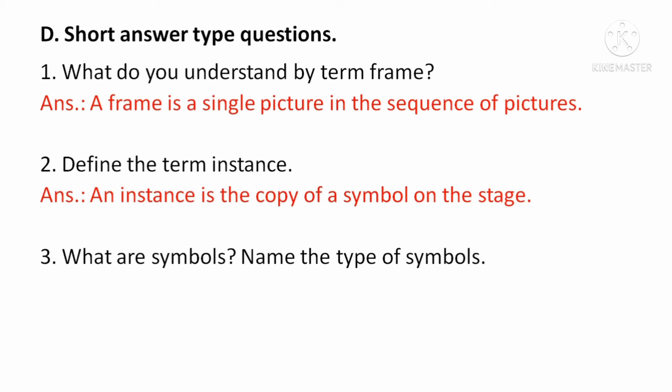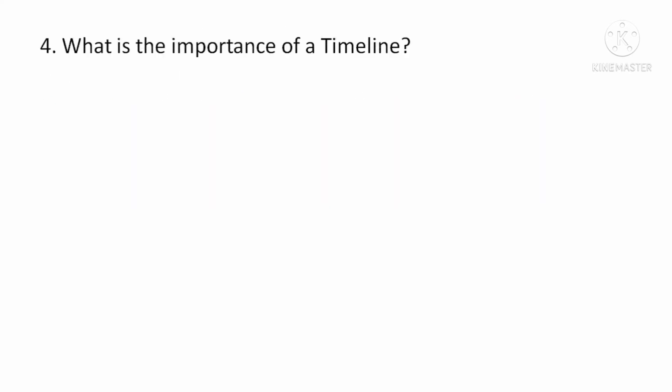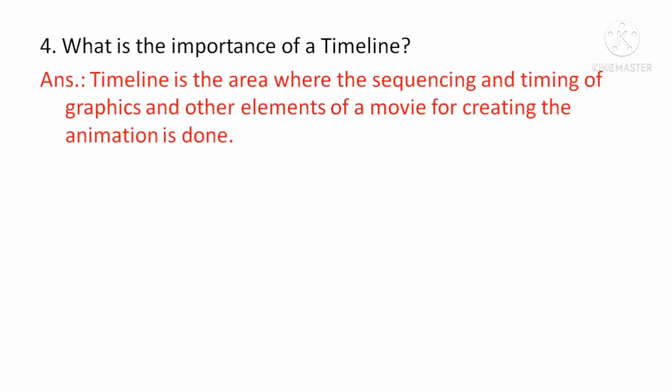What are symbols? Name the types of symbols. A symbol is an object, और वो graphics, button या movie clip हो सकता है. What is the importance of a timeline? Timeline is the area where the sequencing and timing of graphics and other elements of a movie for creating the animation is done. Timeline पर ही हम objects या graphics की sequencing करते हैं और उनकी timing set करते हैं.